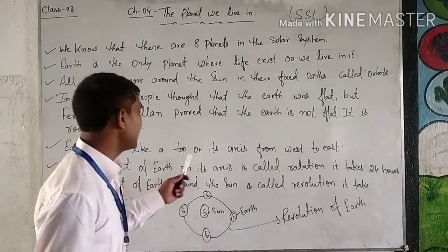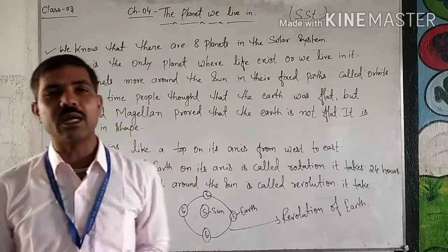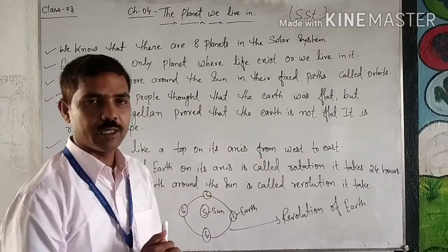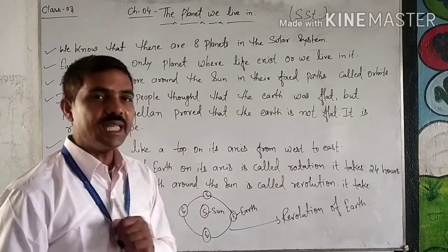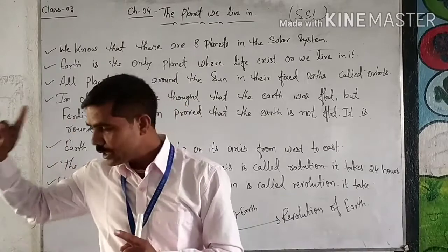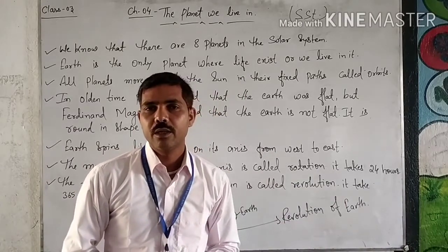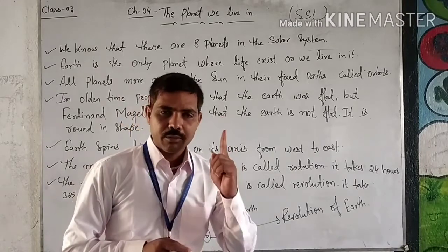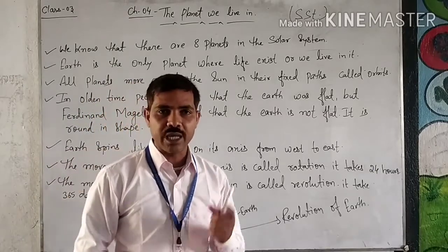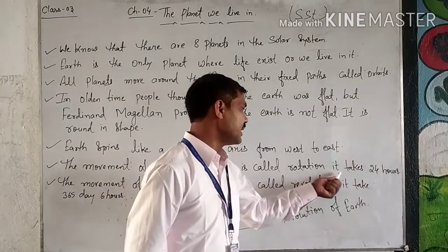Earth spins like a top on its axis from west to east. The movement of Earth on its axis is called rotation, and it takes 24 hours to complete one rotation. This is what causes day and night.